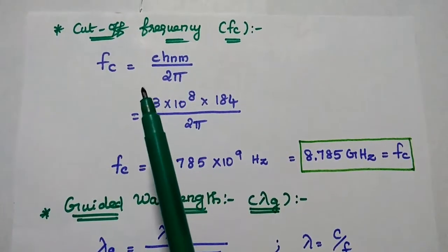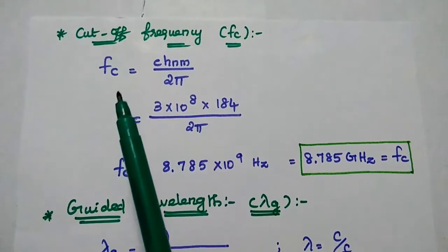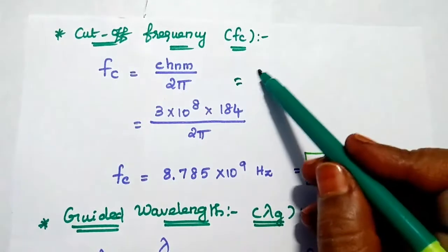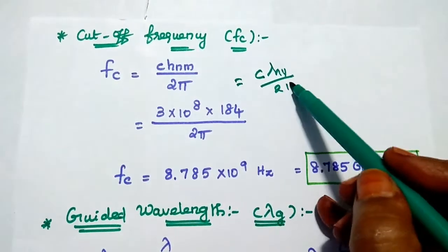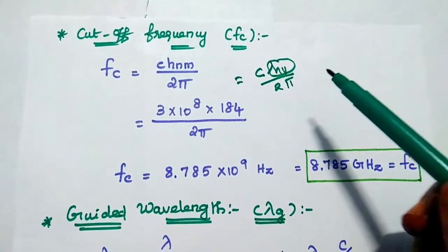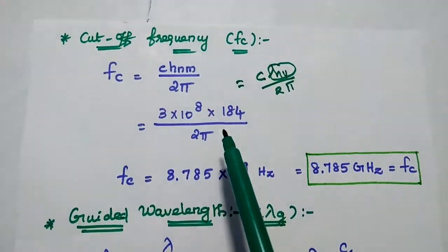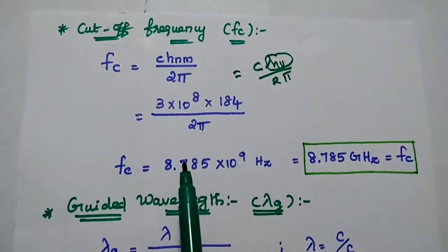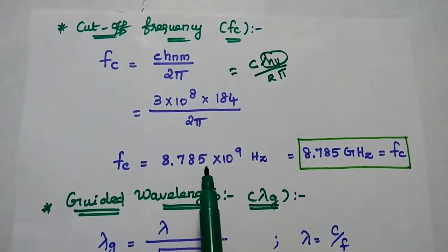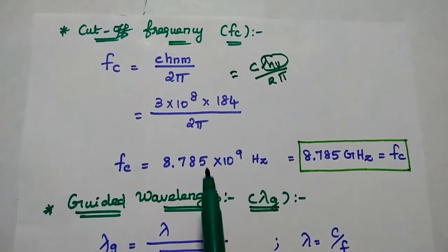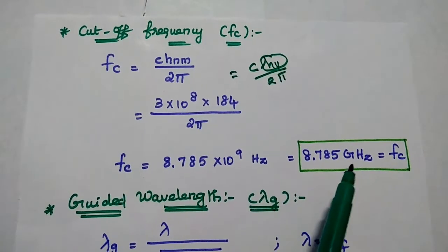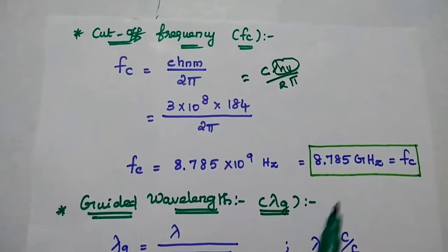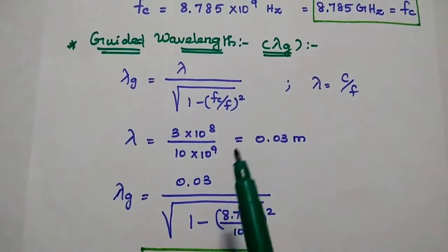Next we are going to find out the cutoff frequency. Its formula is f_c = c × H_nm / (2π). Here the H_nm value is c × H'_11 / (2π). We have already calculated H'_11 as 184. Substituting the values, we get the answer as 8.785 × 10⁹ Hz, so the cutoff frequency is equal to 8.785 GHz.